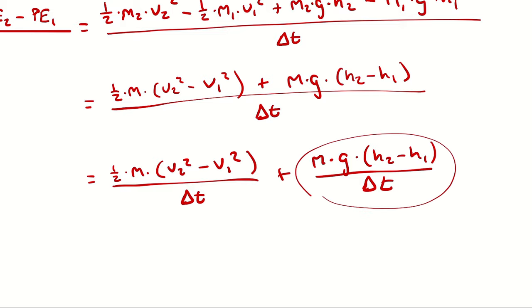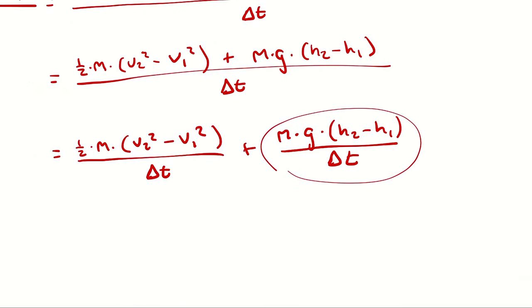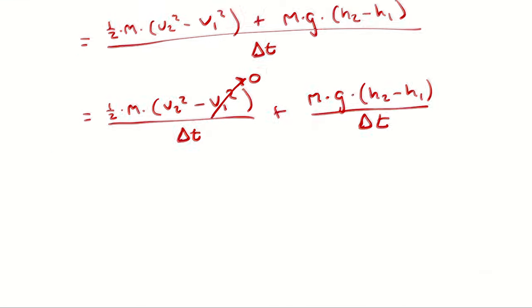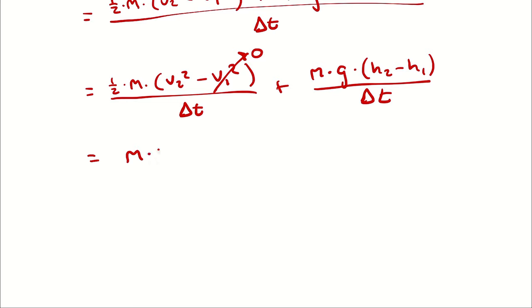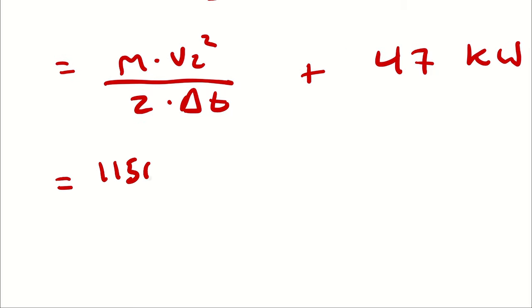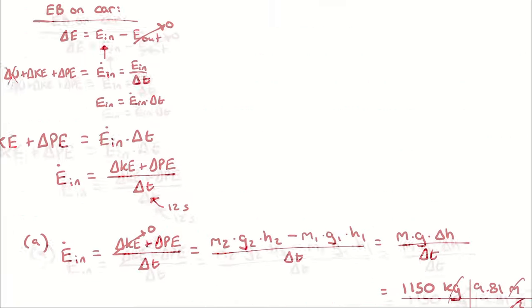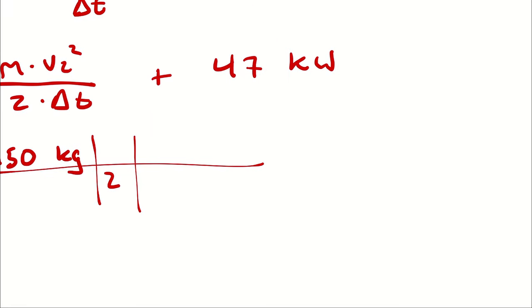For part B, V1 is zero because the process begins at rest, so this becomes mass times V2 squared divided by (2 times duration) plus 47 kilowatts. My mass is 1,150 kilograms, V2 is 30 meters per second, so V2 squared is 900 meters squared per second squared, divided by 12 seconds, with the kilowatt unit conversion applied.